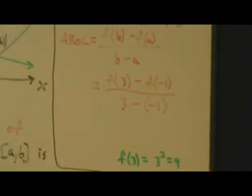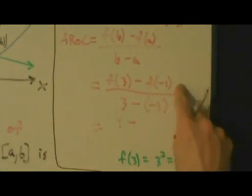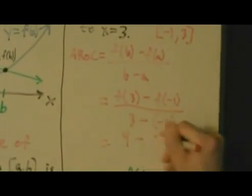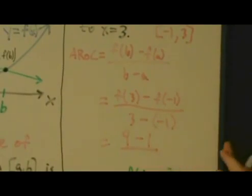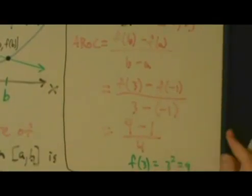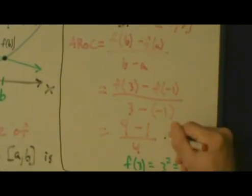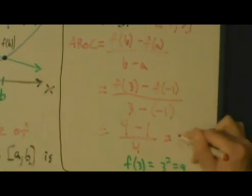All right, so going back to our calculation here, this is going to equal, f of 3 we know is 9, so this is 9 minus f of negative 1 is positive 1. So this is 9 minus 1 all divided by what's on the bottom. 3 minus negative 1 is 3 plus 1, which is 4. All right, so 9 minus 1 is 8, and 8 divided by 4 is 2. So the answer to this is 2.